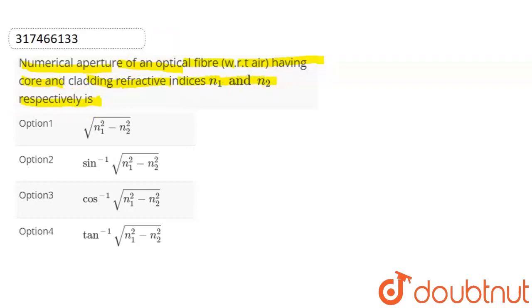So kids, we have this situation where we have a cladding and core. The core has refractive index n1. The core is inside, cladding is outside.